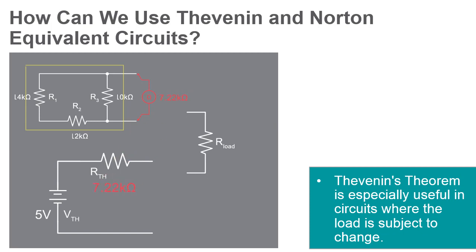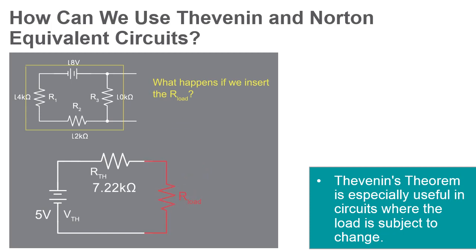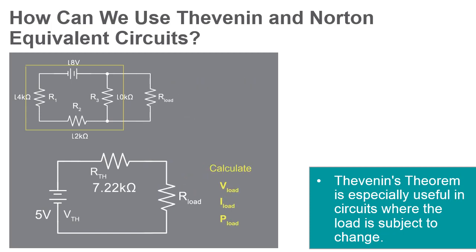Thevenin's Theorem makes this easy by temporarily removing the load resistance from the original circuit and reducing what's left to an equivalent circuit composed of a single voltage source and a single series resistance. The load resistance can then be reconnected to this Thevenin equivalent circuit and calculations carried out as if the whole network were nothing but a simple series circuit.